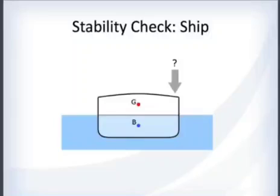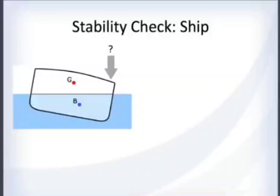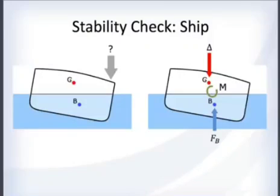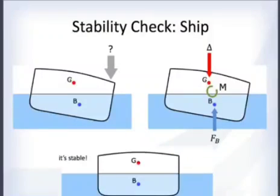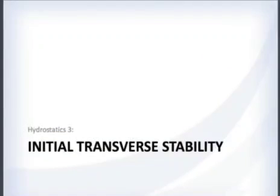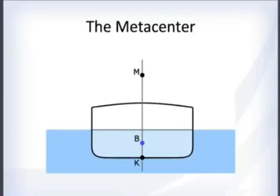You can apply the same concept to a ship. Heel it over to one side from a load or wave. The center of buoyancy shifts. Applying the force vectors and looking at the moment, in this case the moment acts to right the ship — the ship is stable.